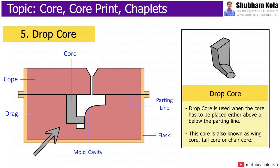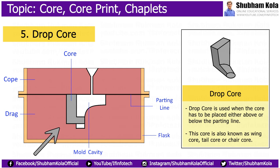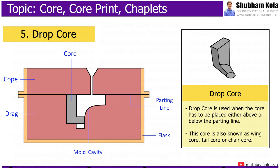The drop core is used when the core has to be placed either above or below the parting line. This core is also known as wire core, tail core, or chair core.